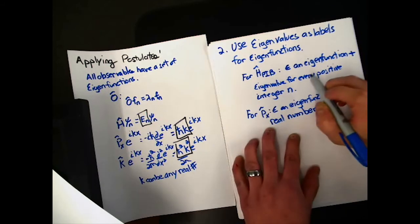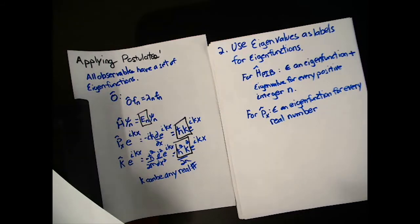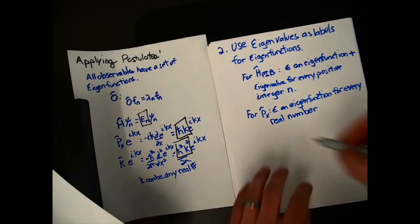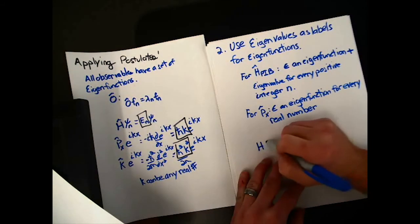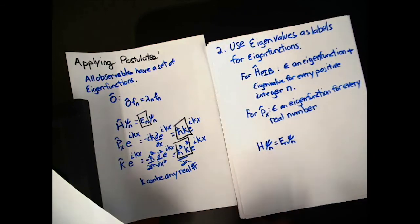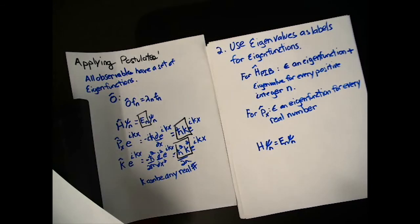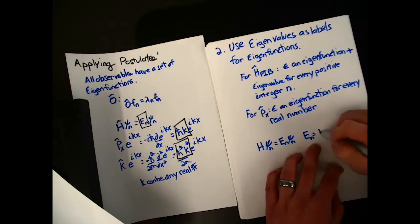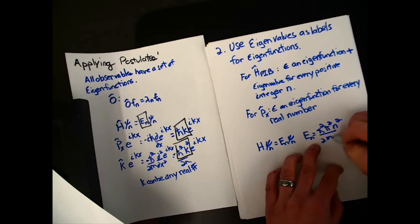And so, we're going to use those numbers to label both the eigenvalue and the eigenfunction. So, for example, for a particle in a box, I would say h psi sub n equals e sub n psi sub n and that's shorthand for saying that the energy is h bar squared pi squared n squared over 2m a squared and psi sub n equals square root 2 over a sin n pi x over a.